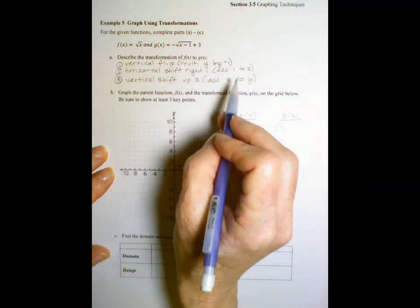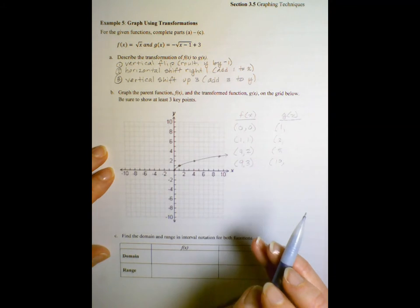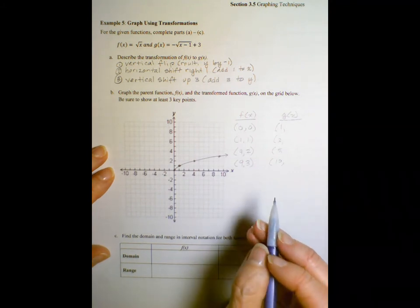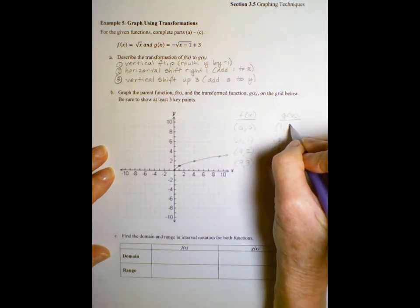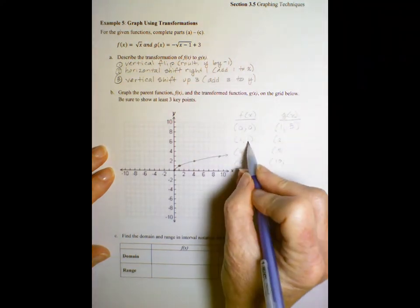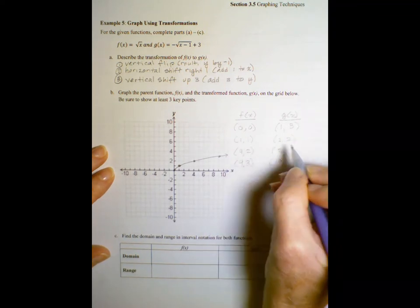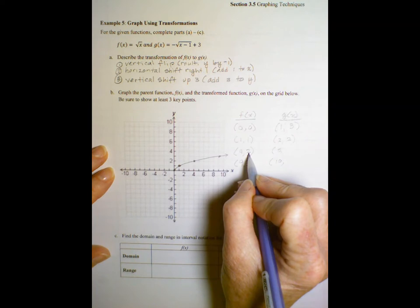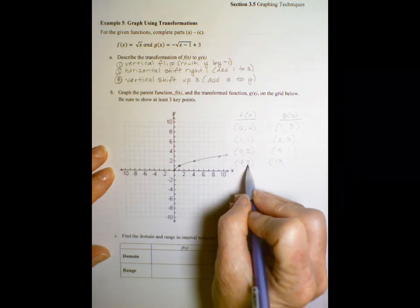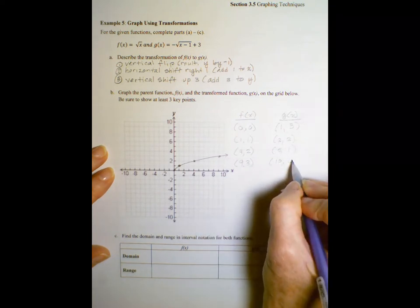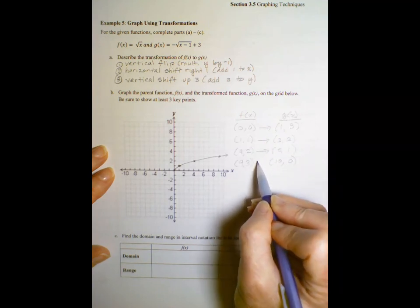For y, I multiply by negative one and add three. Which do we do first? Right, we multiply. Multiplication comes before addition. So negative one times zero is zero plus three is three. Negative one times one is negative one plus three is two. Negative one times two is negative two plus three is one. And negative one times three is negative three plus three is zero. So now I know this is the transformation for each of those points.